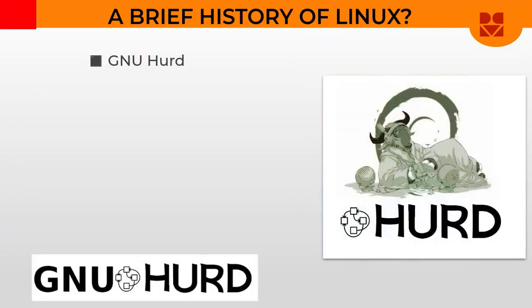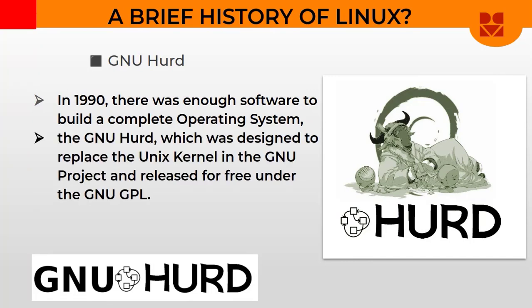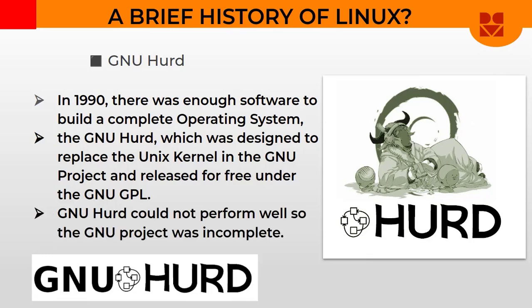Around 1990, Richard Stallman's GNU project had enough software to build a complete operating system. But the problem was getting something — a program — that would unite all these softwares and make them run together. At that time, they called it the GNU Hurd, and the Hurd was designed to replace the Unix kernel and be the core of the GNU operating system. But the GNU Hurd could not perform well, which made the GNU project incomplete.